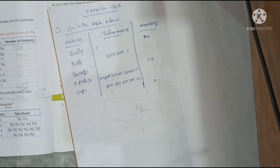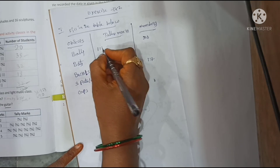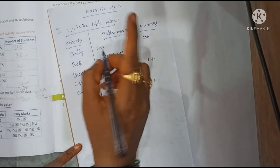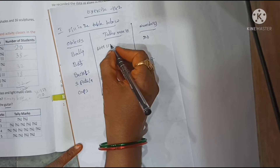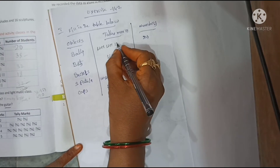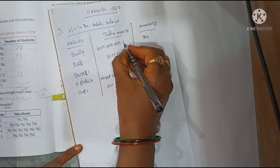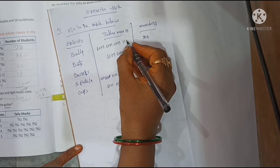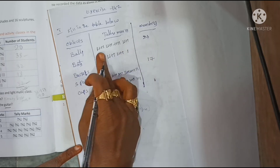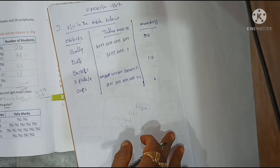To write 20 in tally marks: one group of five, another group of five — that's ten. Then another group of five, and another group of five. So 5 plus 5 plus 5 plus 5 equals 20.